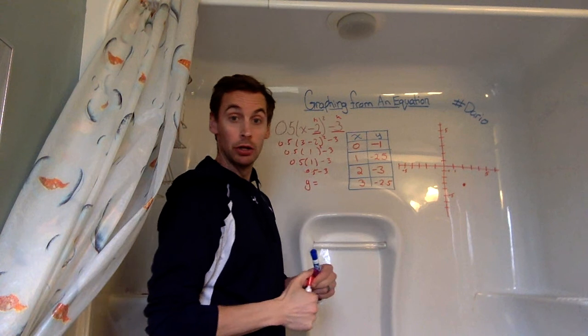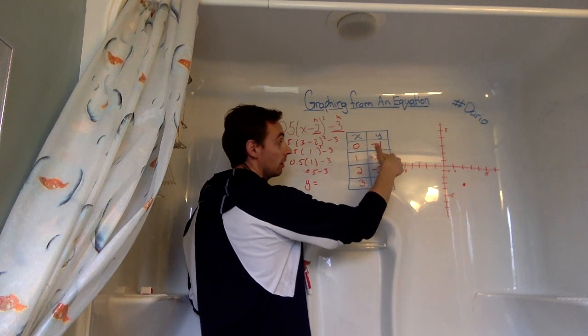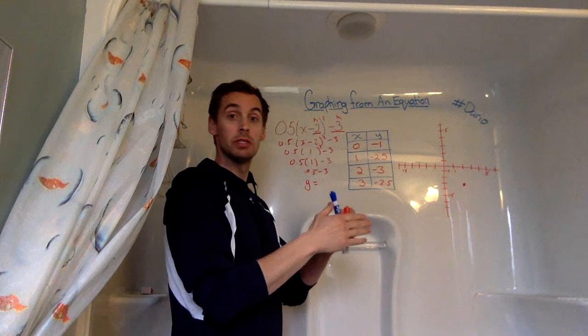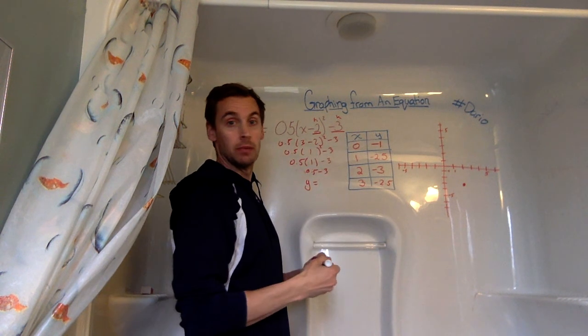So we know our graph is looking good, because we have our vertex, and we can see we have the same distance in between, which means our parabola, it's going to reach our vertex, and then go back the opposite direction.